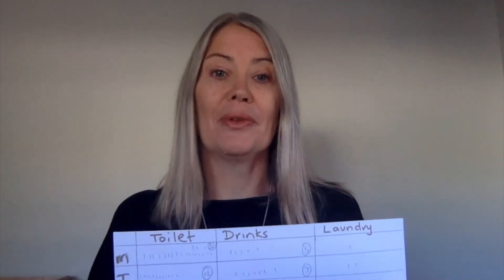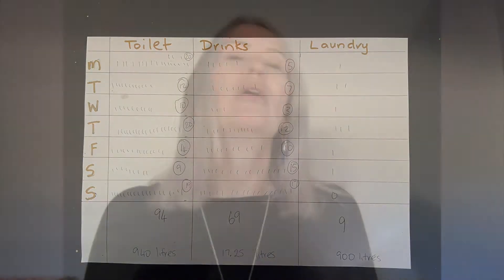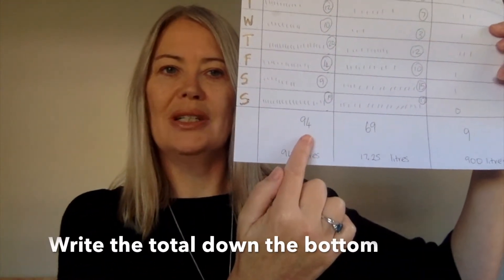Ask each family member to mark a section when they've used something — if they've used the toilet, they put a mark; if they have a drink, they put a mark; and whoever does the laundry can write down how many times a day the washing machine is used. You start on any day of the week but complete it for seven days. Once your week is up and the chart is completed, add up each section and write the total down.